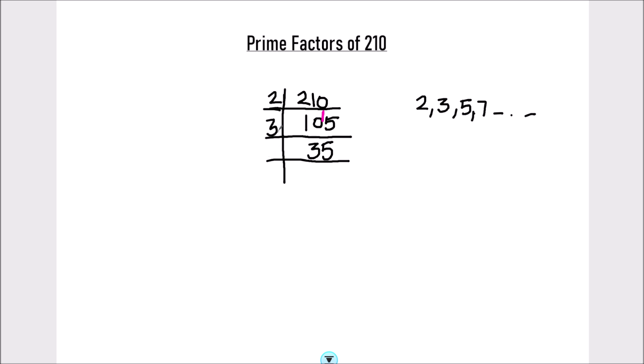Now, 35 is not divisible by number 3. Let's take the next prime number 5 and divide 35. 5 times 7 is 35 and now 7 is a prime number.